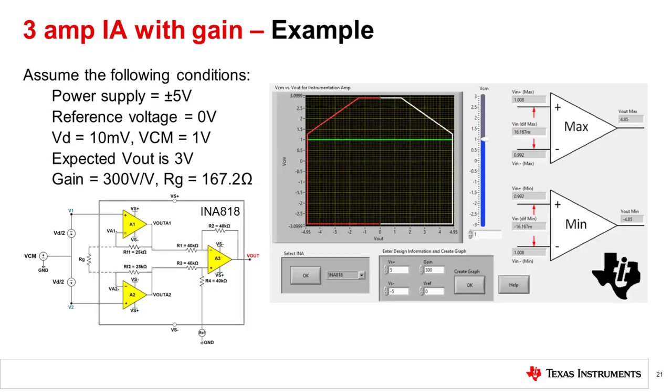Before grabbing any resistors and making any connections, let us make sure that the INA 818 is able to process these conditions. If not, we would need to adjust our conditions or pick a different IA. Using the IA VCM vs VOUT calculator tool, let us plug in our specs.